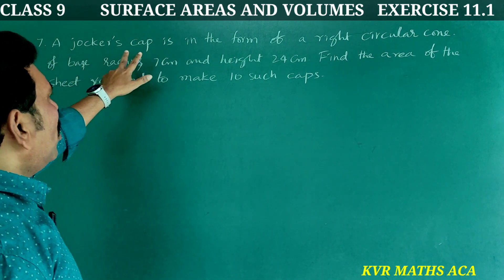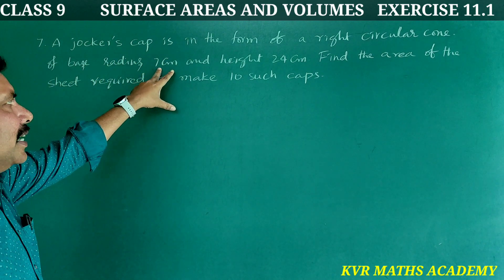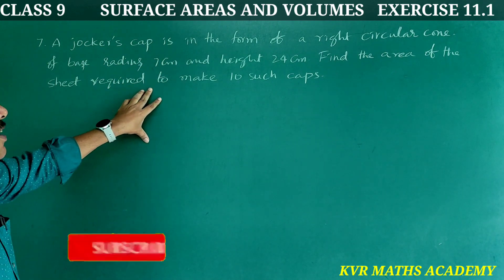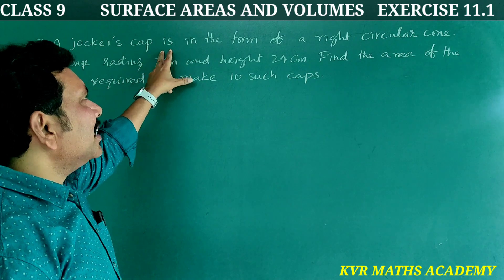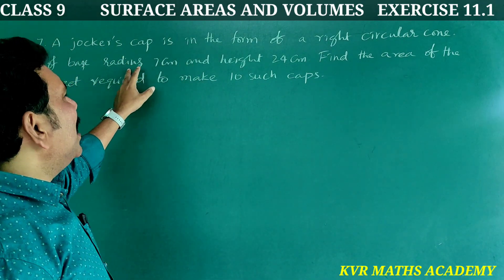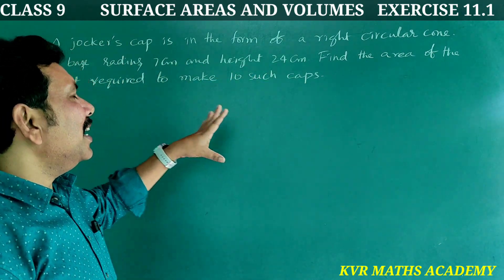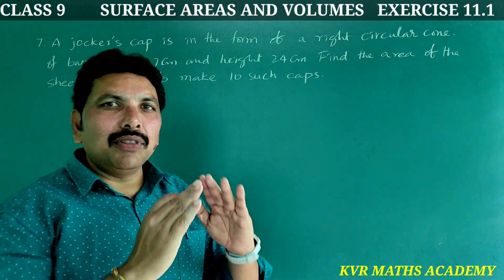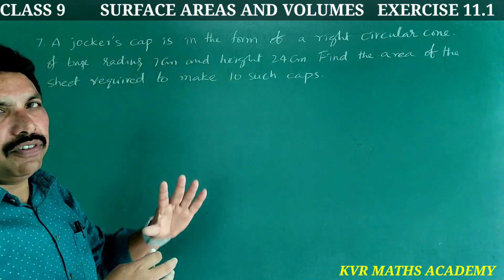7th question: A joker's cap is in the form of a right circular cone with base radius 7 cm and height 24 cm. Find the area of the sheet required to make 10 such caps. A joker's cap is in the form of a cone — you can see the base radius is 7 cm and height is 24 cm.